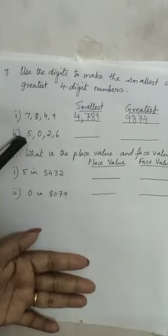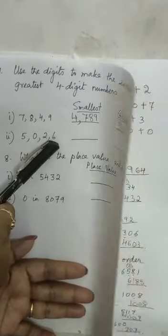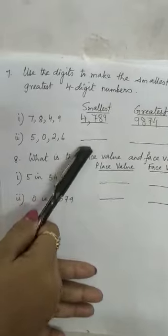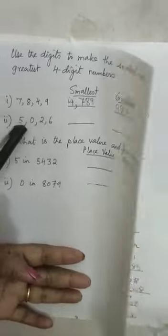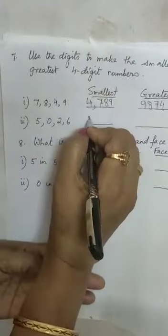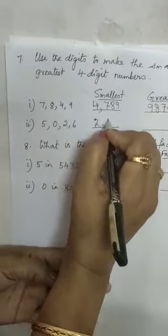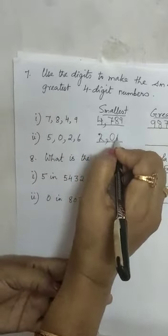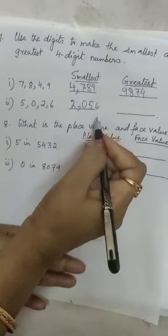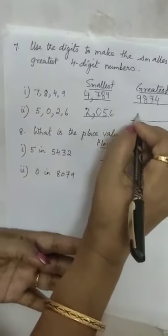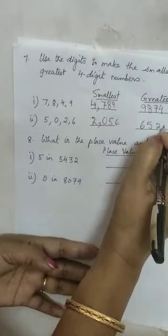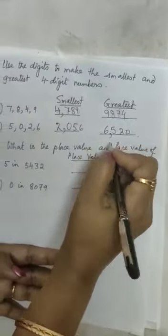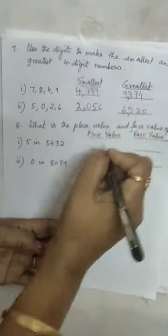Here the digits are 5, 0, 2, 6. When I arrange in ascending order, although 0 is the smallest number, we cannot start a number with 0 — then it becomes a 3-digit number. So we put 2 first, then 0, then 5 and 6: the smallest is 2056. But for the greatest number, we put 0 at the end, so it becomes 6520. Putting a comma after the thousands place makes it easy to understand.